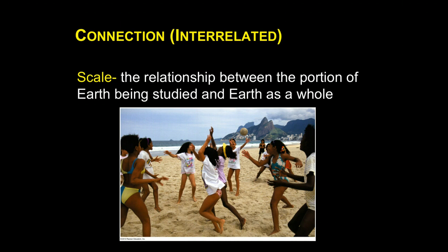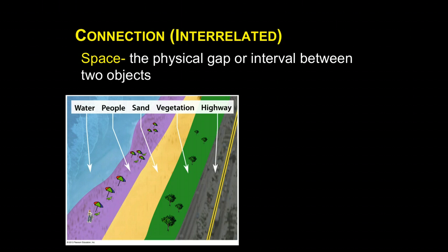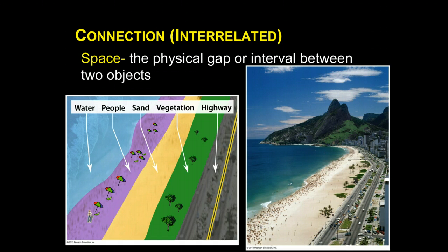Looking at some examples using Ipanema, Rio: in terms of scale, being on the beach in bathing suits might be very acceptable in the local culture, but if we broaden that to different regions throughout the rest of the world, that's not necessarily as acceptable. So defining characteristics can be very different based on whether we're looking at a small or large scale. Space is how land is used in a given place — you can see the water, beach, sparse vegetation, and the highway, the same pattern visible in an actual beach shot of Ipanema.